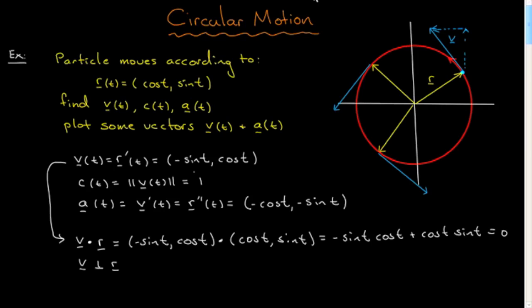The final thing has to do with the acceleration. In this case the acceleration vector is simply minus the position vector — that won't always be true, but it is here, so it's easy to draw the acceleration vectors. They're simply minus the position vectors. I'll draw them in orange pointing inwards — exactly minus the position — and that's the acceleration. A simple, straightforward problem on circular motion, computing and plotting these various quantities. I'll pause here and go on to some slightly more complicated problems.